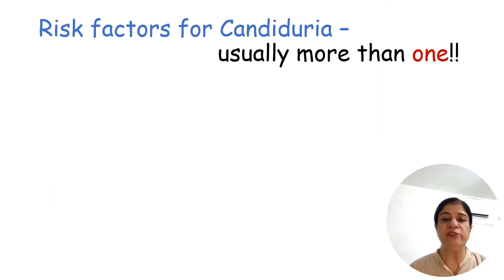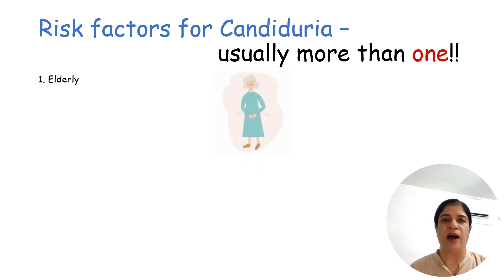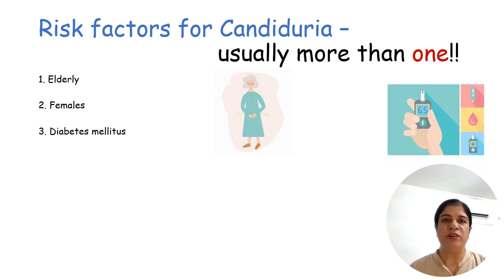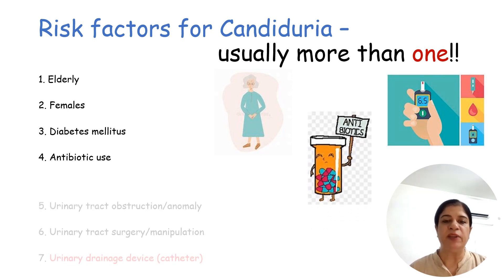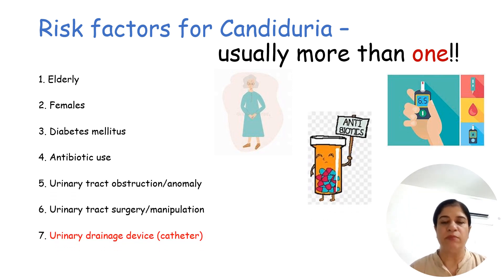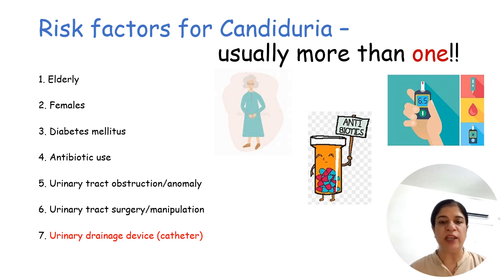There are several risk factors for candiduria, and more than one risk factor is usually present at a time. Mostly, patients are elderly women who may have diabetes or are on antibiotics. There can also be some urological problem like an anomaly, some manipulation, or the most common factor for ascending infection — the presence of a urinary catheter.